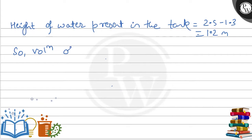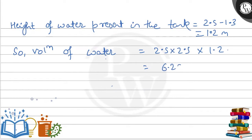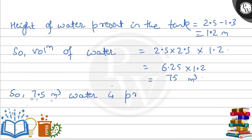So volume of water present will be 2.5 into 2.5 into 1.2, which will be equal to 7.5 meter cube. So 7.5 meter cube of water is present in the tank.